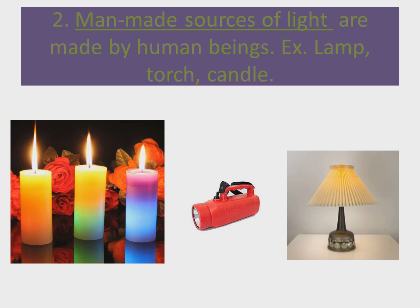The other type is man-made sources of light. Man-made means anything that is made by human beings and gives light. On your screen you can see the man-made sources of light: candles, torch, and lamp — all three are made by human beings. They give light, so they are sources of light, and because they are made by humans, we call them man-made sources of light. They are not natural sources of light.